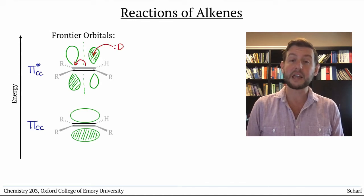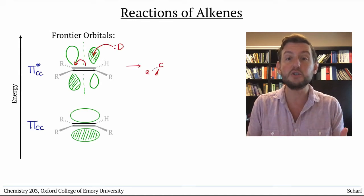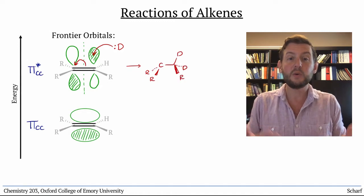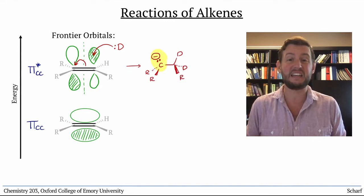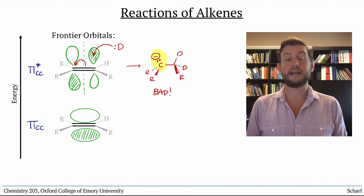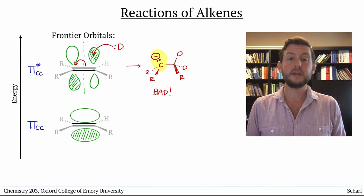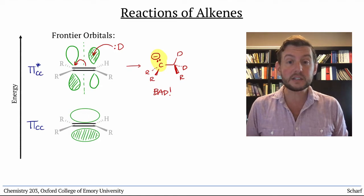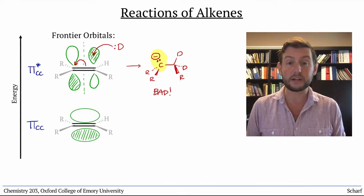If some donor came and put electrons into pi star cc, we'd make a carbanion. These are not stable. Carbon doesn't usually like to have a negative charge. So, alkenes do not behave as electrophiles.